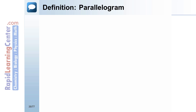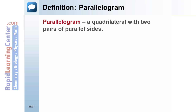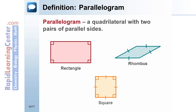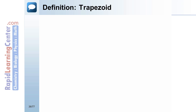A parallelogram is a quadrilateral with two pairs of parallel sides. If the parallelogram has four right angles, it is classified as a rectangle. If the parallelogram has four congruent sides, it is classified as a rhombus. A square is both a rectangle and a rhombus because it has four right angles and four congruent sides.